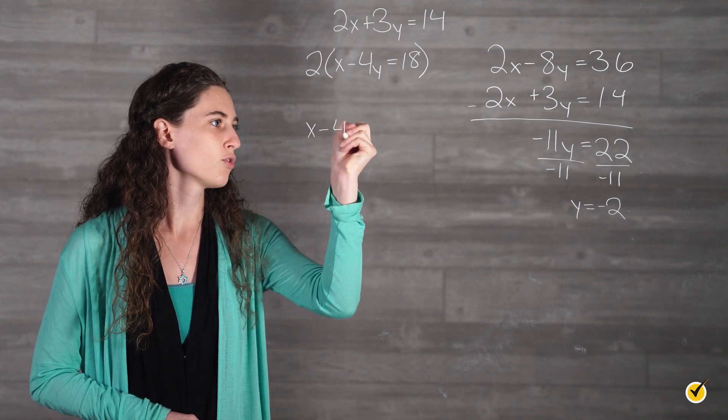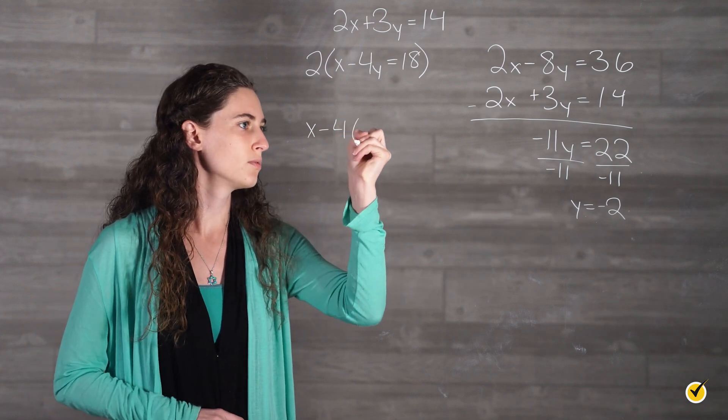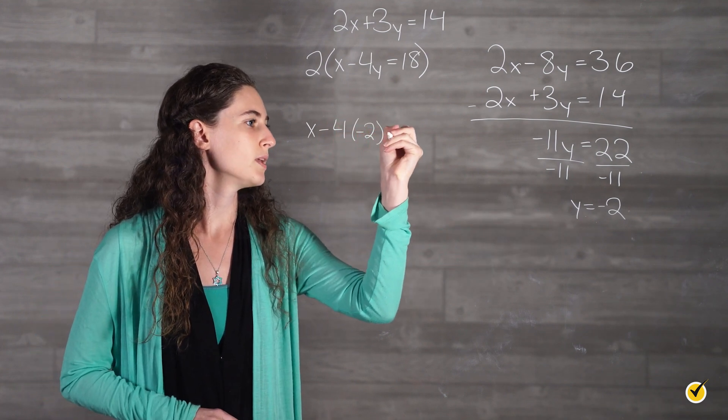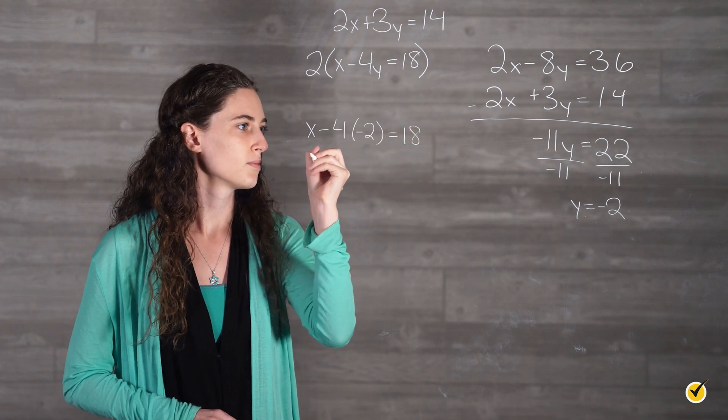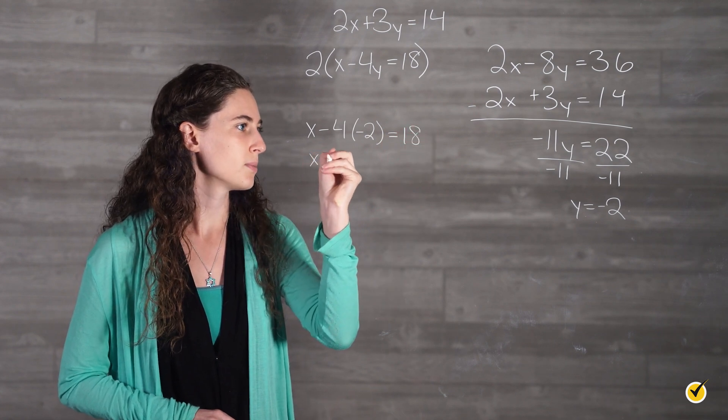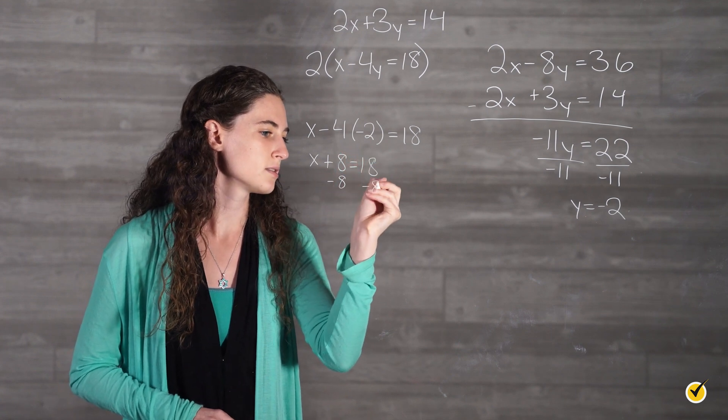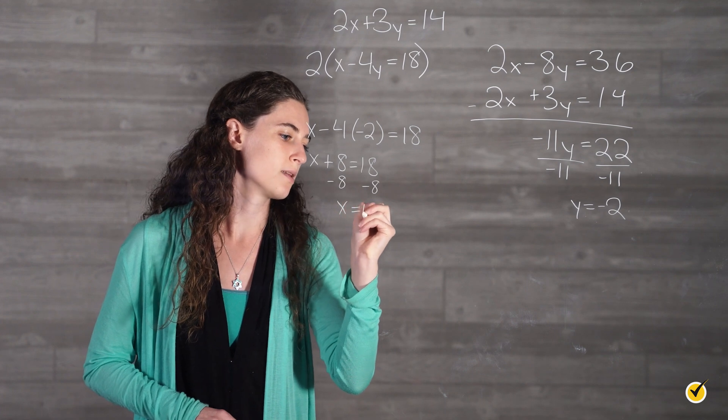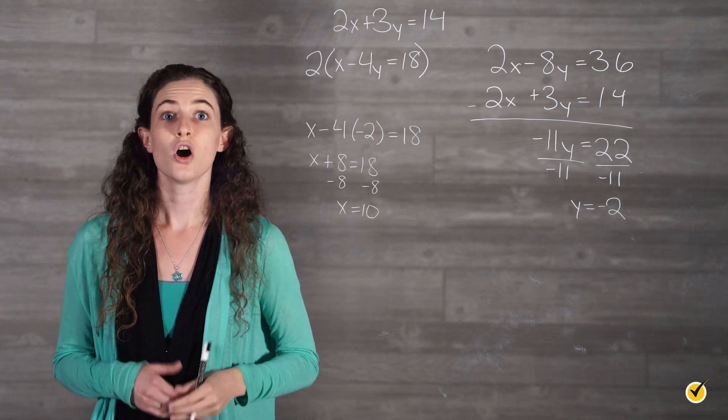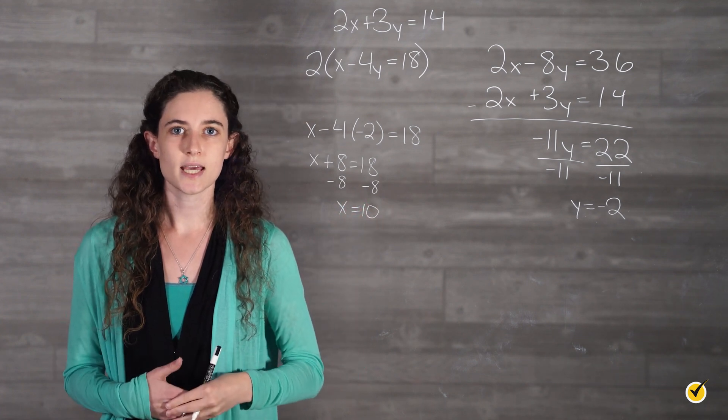x minus 4 times negative 2 equals 18. Subtract 8 from both sides and you get that x is equal to 10. Our x value for this system is 10.